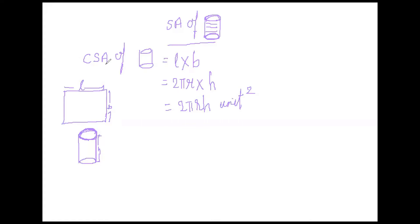So this is the formula of curved surface area of cylinder. Now, after getting the curved surface area of cylinder, we will find the total surface area of cylinder. To get the total surface area of cylinder, we need the upper surface of cylinder and the lower surface of cylinder also. This is the upper face of cylinder which is circular. This is the lower face of cylinder — that is also circular and symmetric to the upper face. We know that area of a circle is πr².